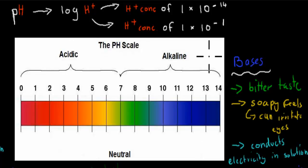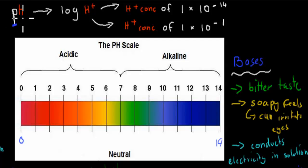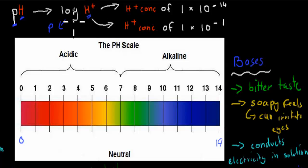You should have seen the pH scale before — it goes from 0 to 14. Now what do these numbers actually mean? When it comes to the pH scale, there are two parts: the letter P and the letter H. P in this case actually stands for log, and the H stands for hydrogen ions. So what we're doing is taking the log of the concentration of hydrogen ions.